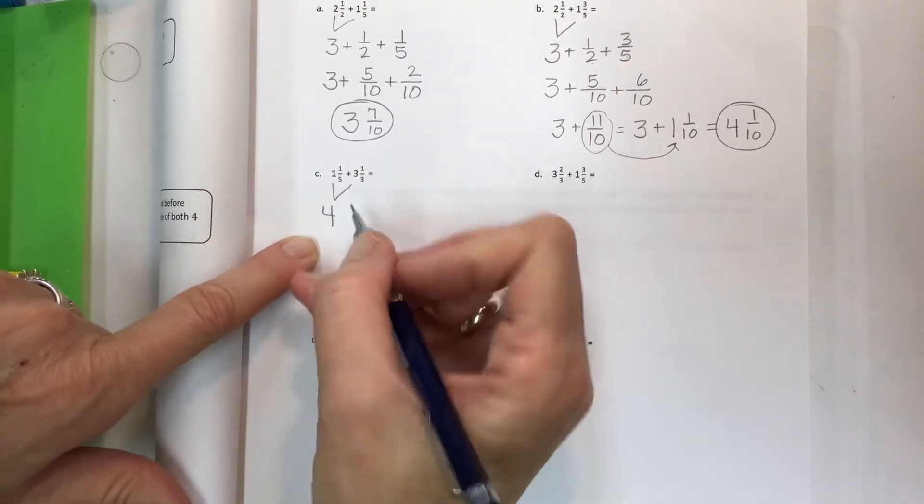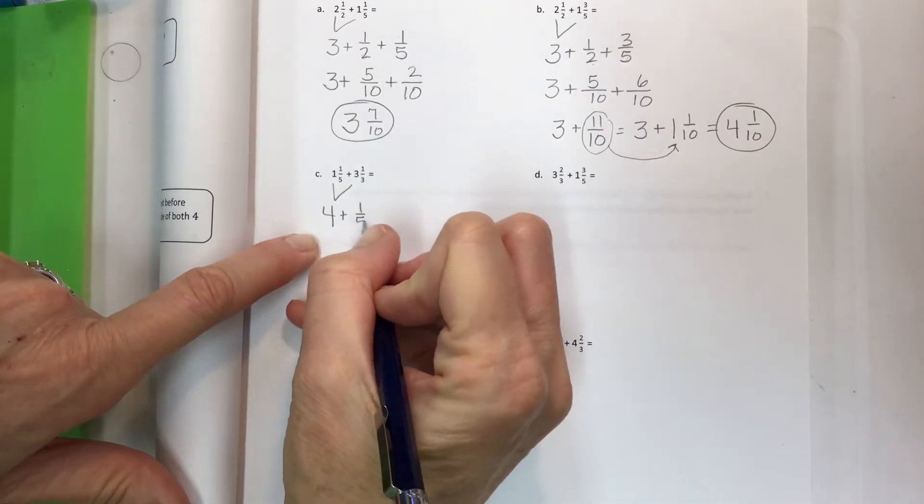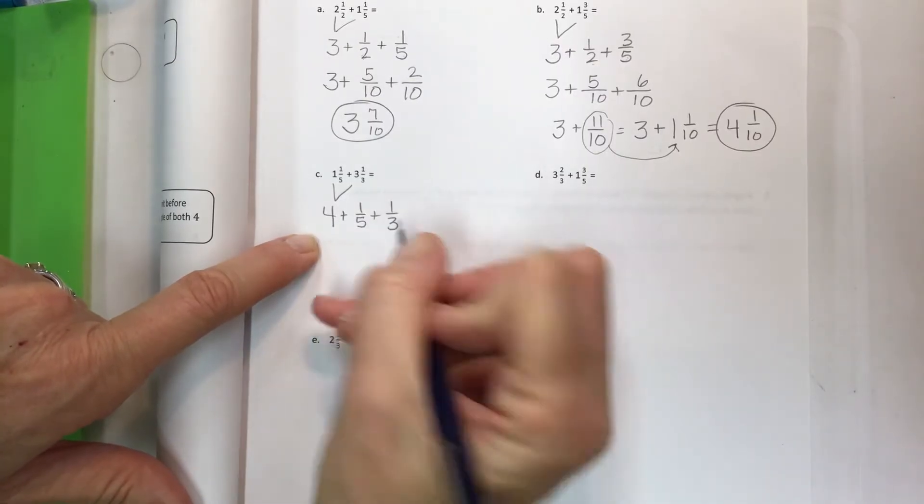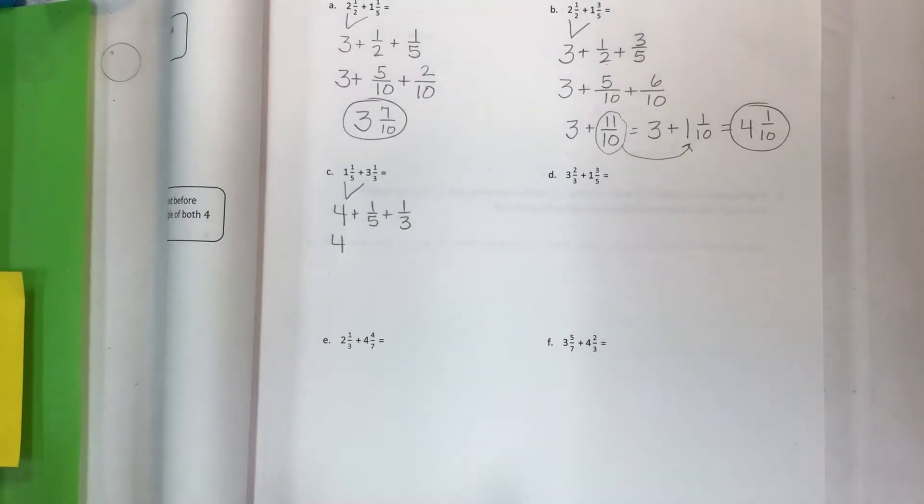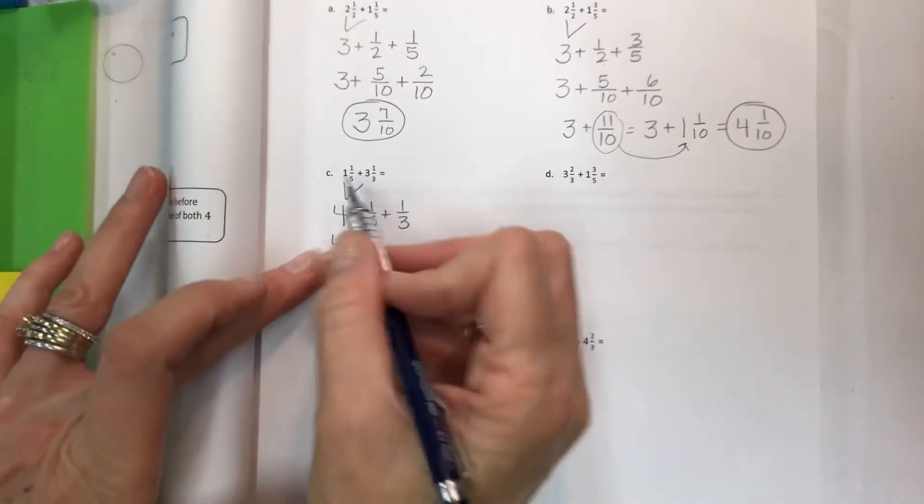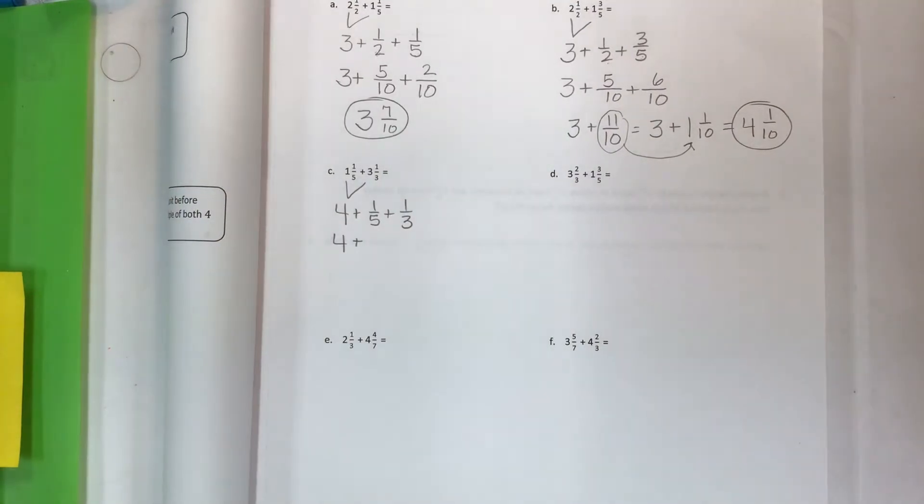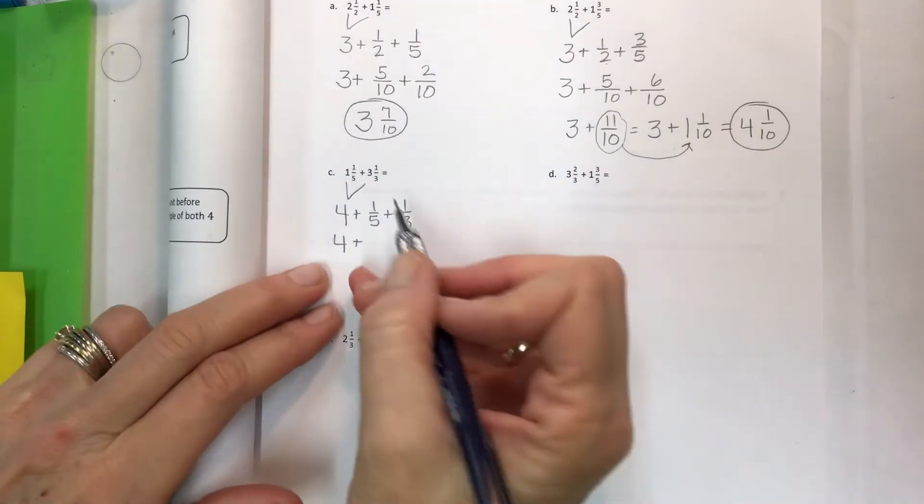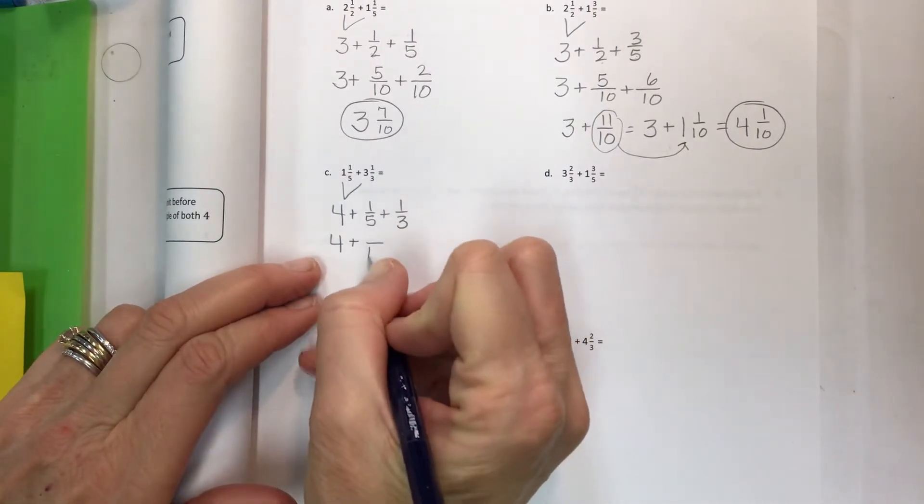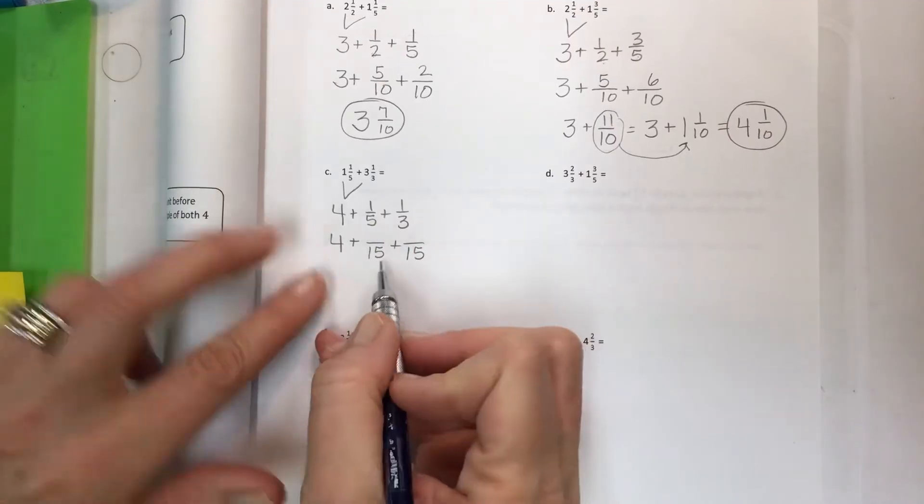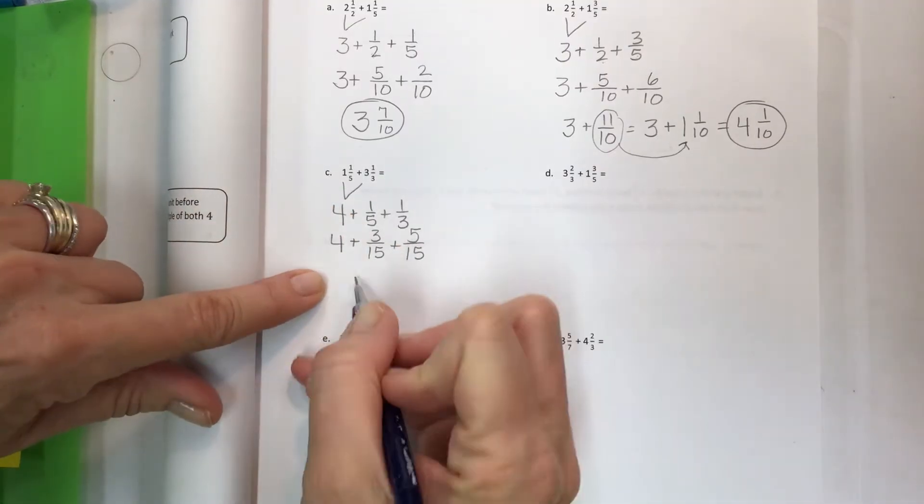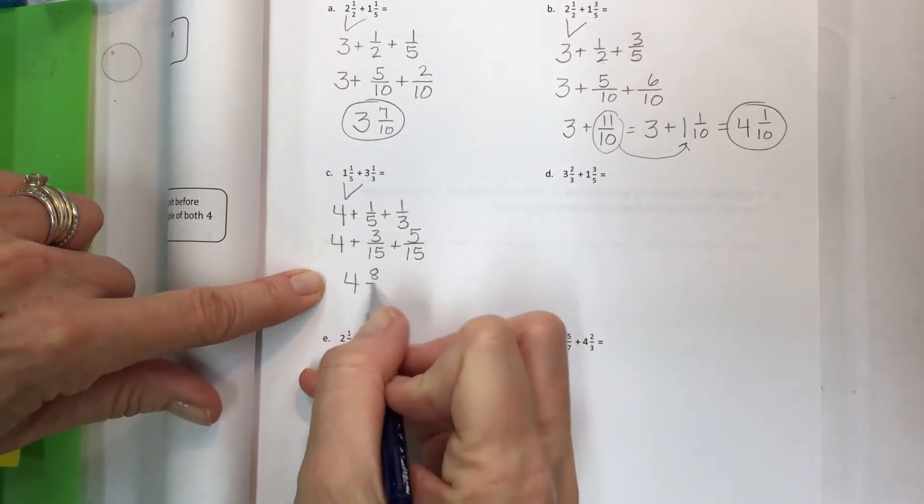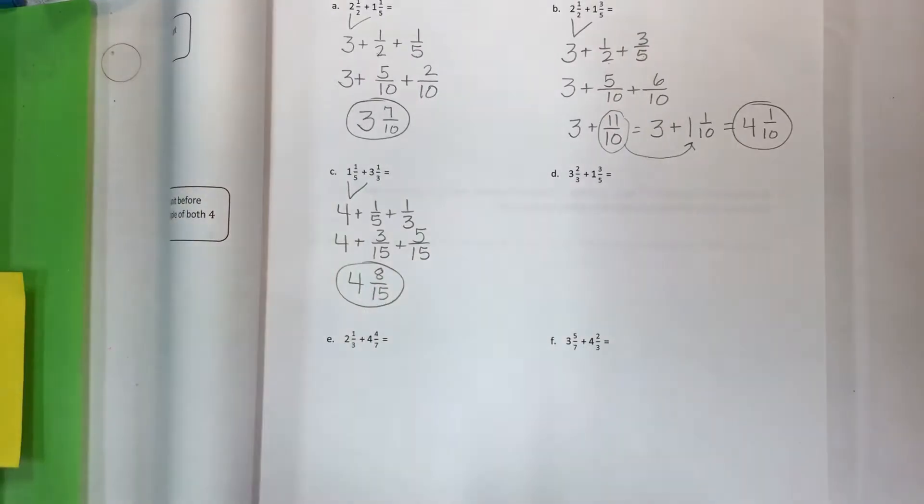Okay, one plus three is four plus one fifth plus one third. We need to have a common denominator so rewrite your whole number. Please take the time to do that. If you don't do it I promise at some point you're going to forget about the whole number and you'll end up with just fractions and then you'll say why did I get this wrong and I'll say oh my gosh I told you how many times write the whole number. Our common denominator for five and three will be fifteen. The scale factor three times one, five times one, add them up. Four and eight fifteenths. Nice and easy right?